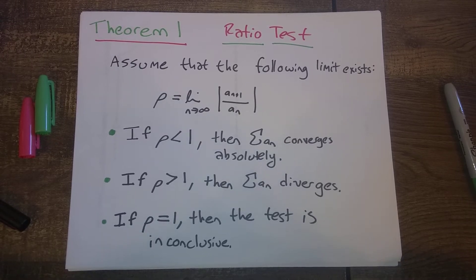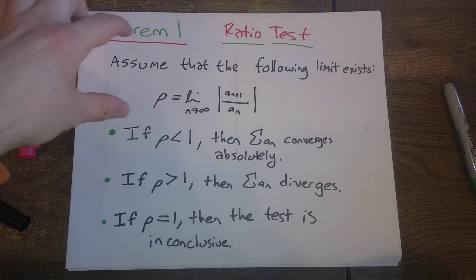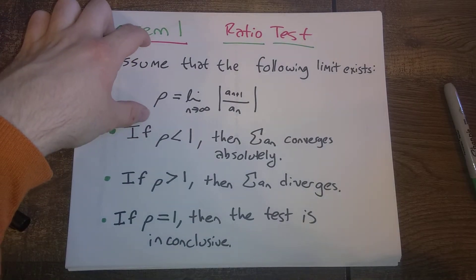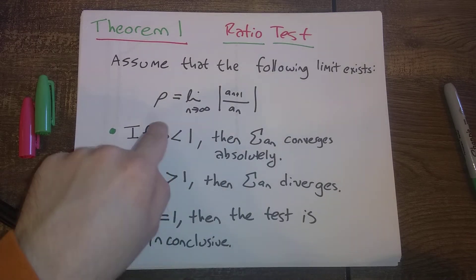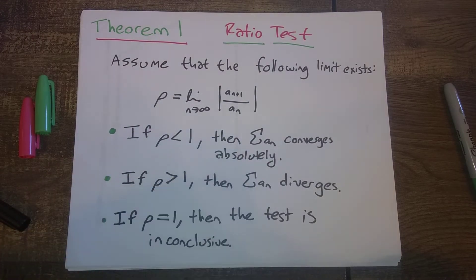To finish off section 10.5, I want us to go through a proof of the ratio test. We're assuming that the following limit exists for our series here, and so there's three cases. If ρ is less than 1, the series converges absolutely. If ρ is strictly greater than 1, the series diverges. If ρ is equal to 1, the test is inconclusive.